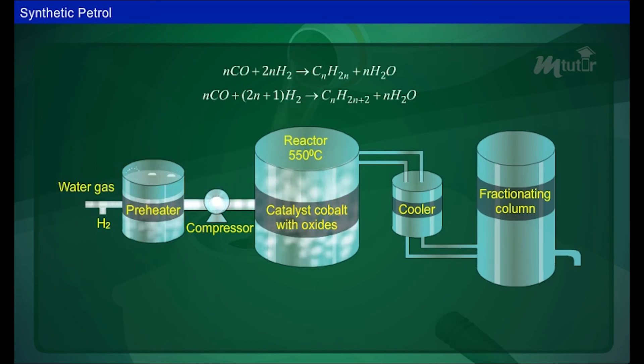The purified gas is compressed to 5 to 25 atmospheres over a cobalt, thorium and magnesium oxide catalyst on kieselguhr at 200 degrees Celsius. Thus, a mixture of straight-chain paraffins and olefins are produced.